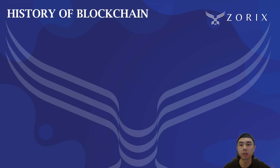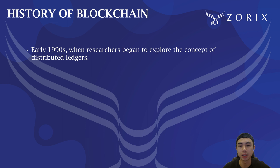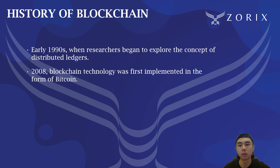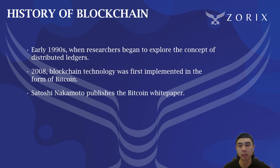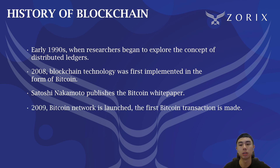For the history of blockchain, it can be traced back to the early 1990s, where researchers began to explore the concept of distributed ledgers. However, it was not until 2008 that blockchain technology was first implemented in the form of Bitcoin, where Satoshi Nakamoto published the Bitcoin White Paper, which describes the first blockchain-based cryptocurrency. And in 2009, the Bitcoin network was launched, and the first Bitcoin transaction was made.